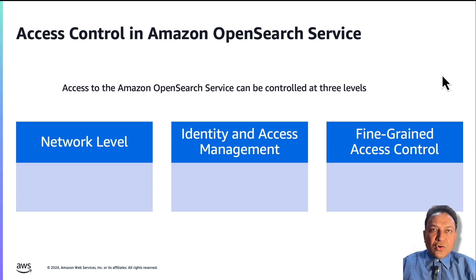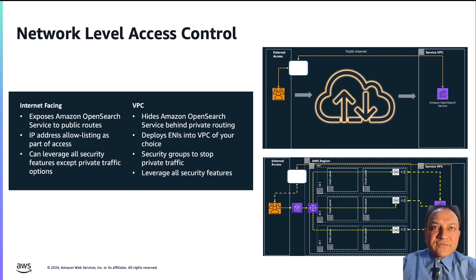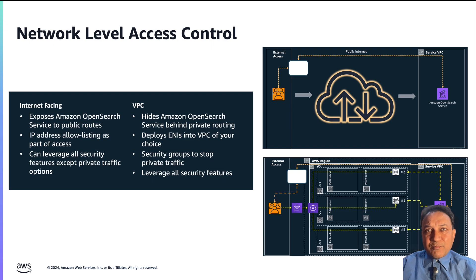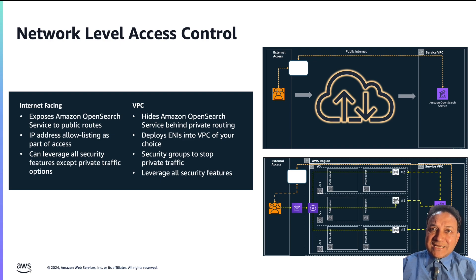Let us take a quick look at each of the three levels. Then we will dive deep into Fine-grained Access Control, which is the primary topic of discussion in this video. Amazon OpenSearch Service clusters can be made publicly accessible, meaning they can be accessed from anywhere on the internet over a public endpoint, or they can be made accessible only from within a VPC or an on-prem data center with VPN or Direct Connect connectivity to the VPC. The network level security configuration controls access to the Amazon OpenSearch Service endpoint.